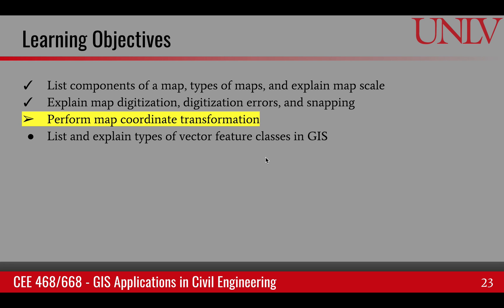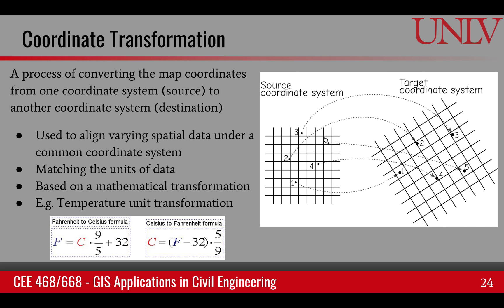The next learning objective of this module is to perform map coordinate transformation. Coordinate transformation is a process of converting map coordinates from one coordinate system to another. It's usually done to align maps — we may have two maps from two different sources with two different coordinate systems, and we want to overlay them. For that purpose, we do map transformation.